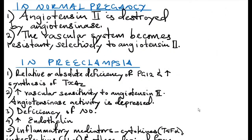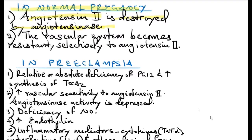Let's look at some of the factors that contribute to the development of preeclampsia. In normal pregnancy, angiotensin 2, a vessel constrictor, is destroyed by an enzyme called angiotensinase produced by the placenta, resulting in stabilization of the blood pressure. Also, the vascular system becomes selectively resistant to angiotensin 2, brought about by vascular synthesis of nitric oxide and prostaglandin I2, which are vasodilators that oppose the effect of angiotensin 2.